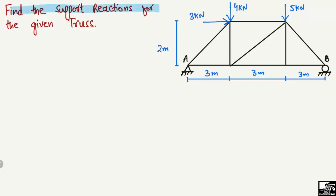This is our task: to find out the support reactions for the given truss. The truss is supported by two supports — one is a hinge support and one is a roller support. There are three different loads acting on this truss: 4 kilonewtons, 5 kilonewtons, and 3 kilonewtons acting laterally. The horizontal dimensions are three meters, three meters, and three meters, and the vertical dimension is two meters.